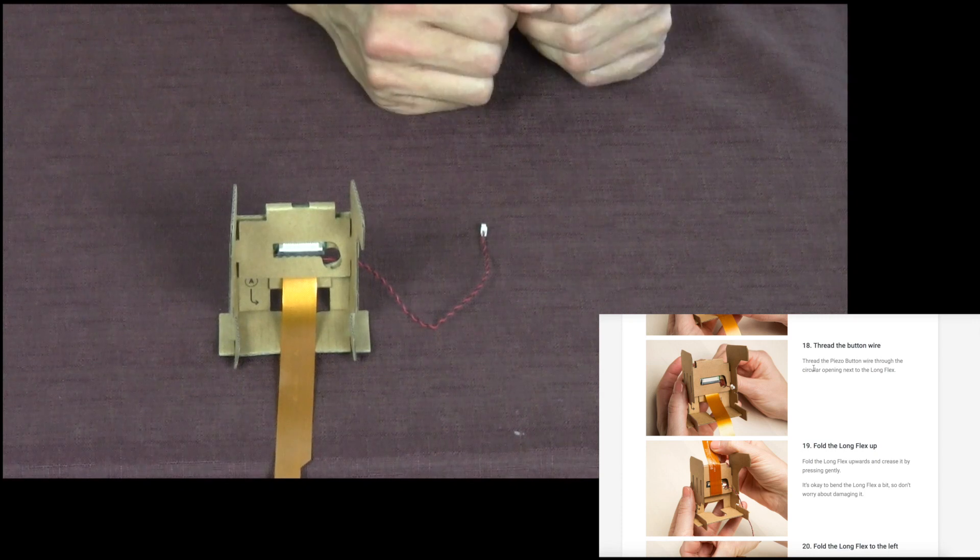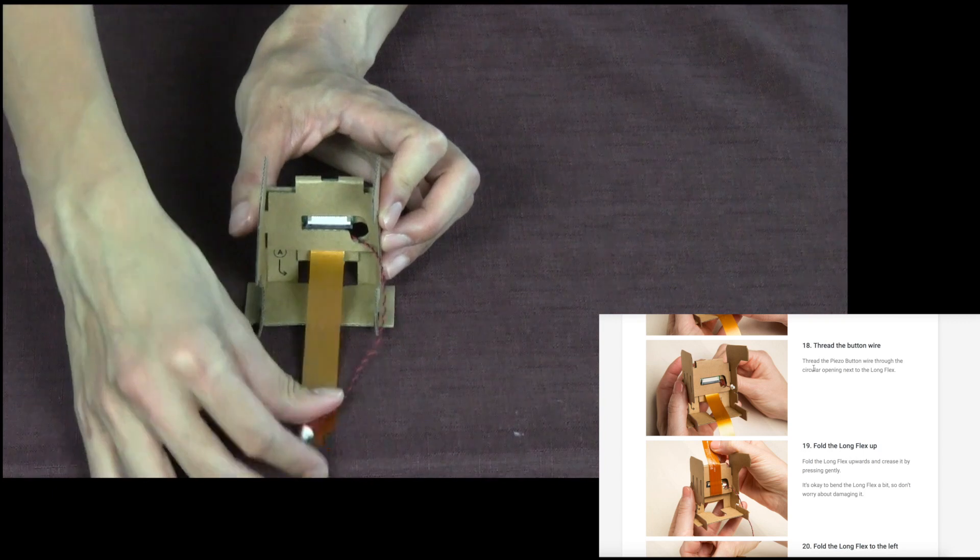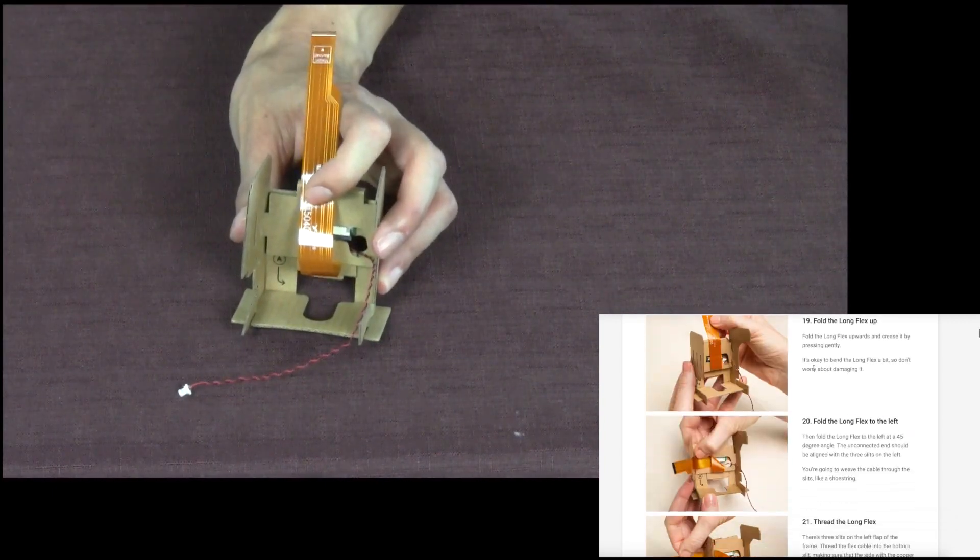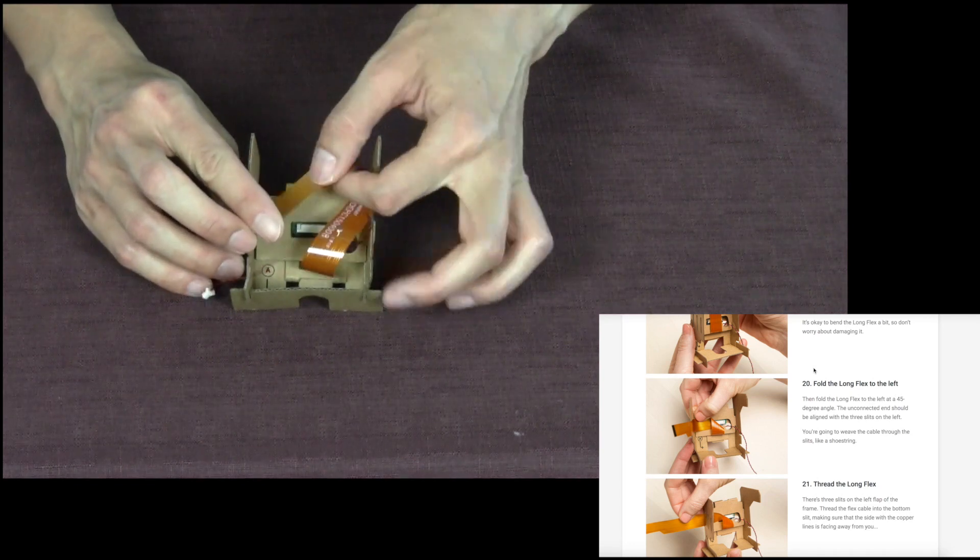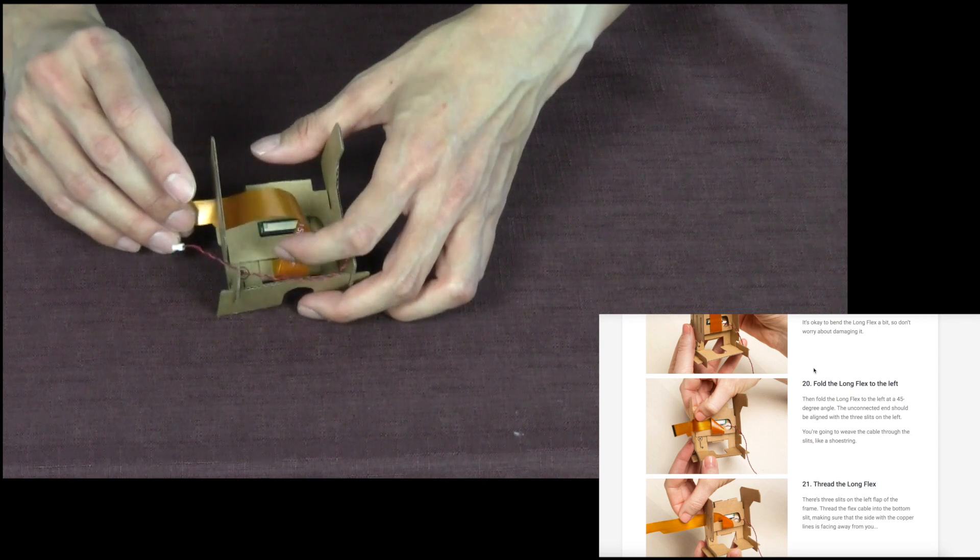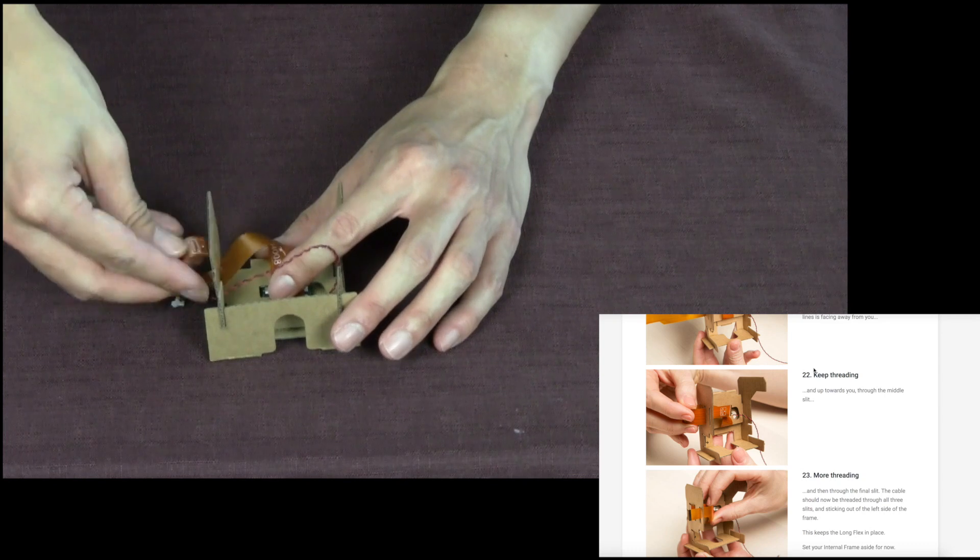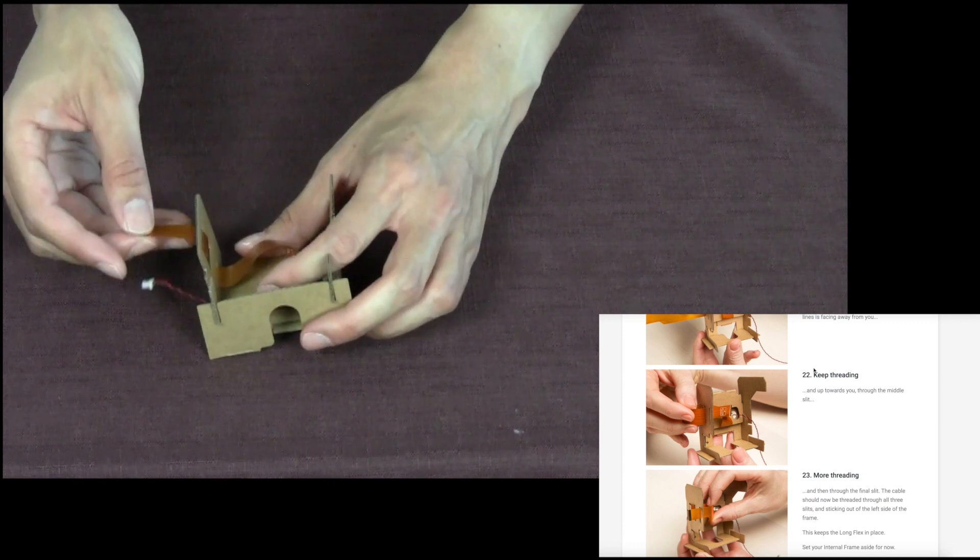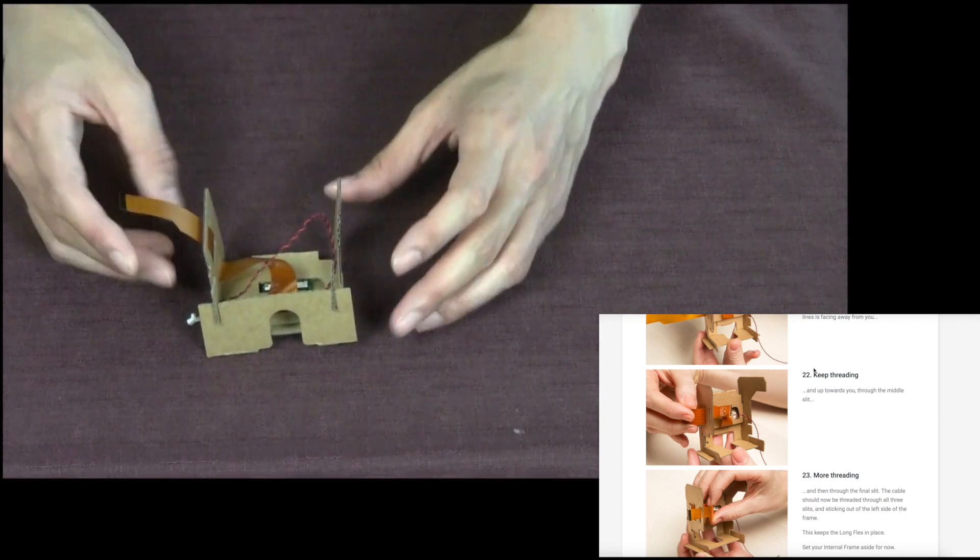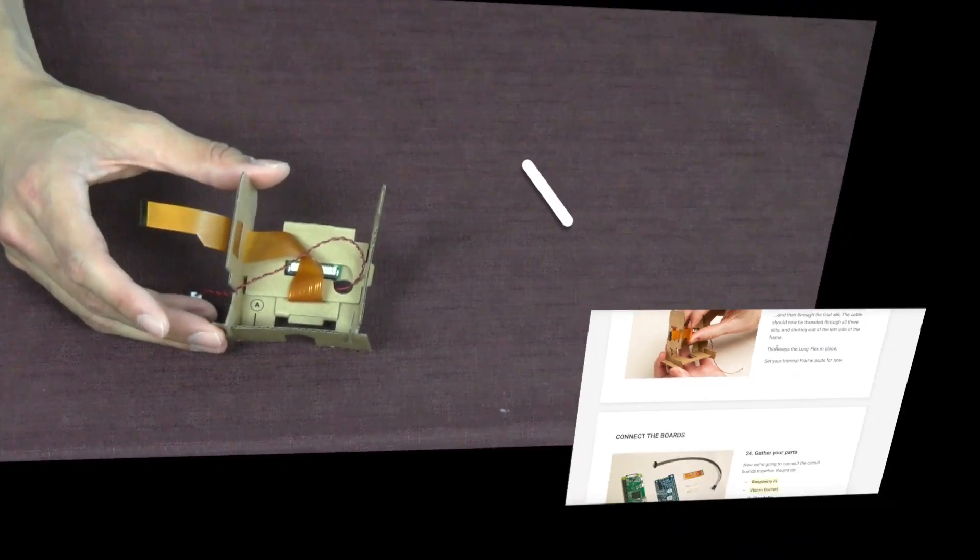Thread the button wire. And then fold the long flex up and to the left. And we're going to thread the long flex and then back through the middle slit. Now that we've finished building the internal frame, next we will connect the board. This is the Raspberry Pi Zero W board with the AIY hat.